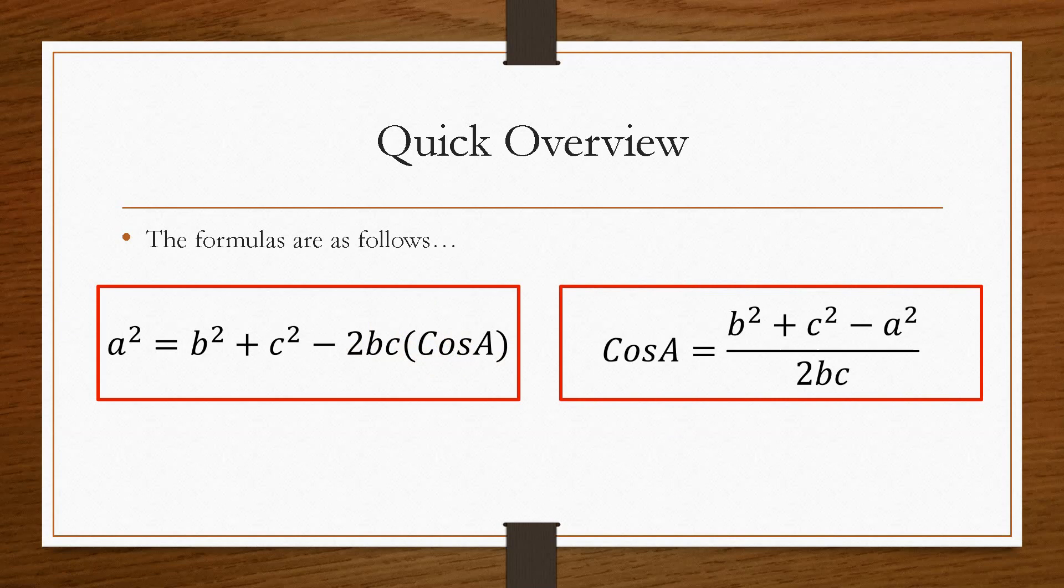And then the other one is to find an angle. So it's cos A equals b squared plus c squared minus a squared divided by 2bc. This is really a manipulation of this equation to give you this. But to save time in the exam, they give you each. So this is for an angle, this is for a line. And again, where the lowercase letters indicate the lengths and the uppercase letters indicate the angles.